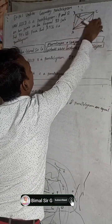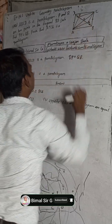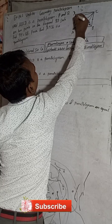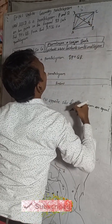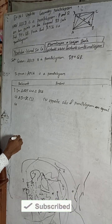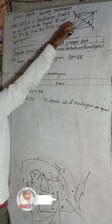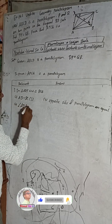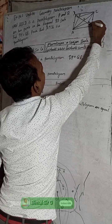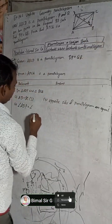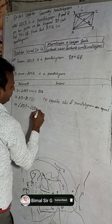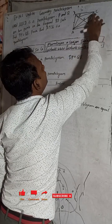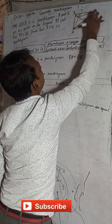Since ABCD is a parallelogram, the opposite sides will be equal. Now we take the angle: angle ADP is equal to angle CBQ. Why? Because AD is parallel to BC — so these alternate interior angles are equal.